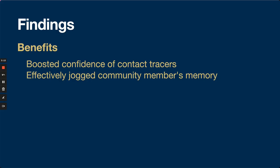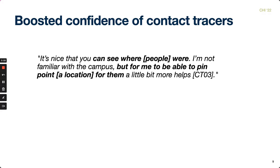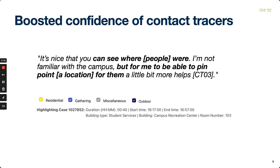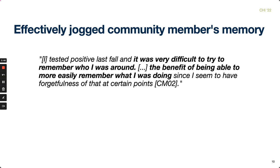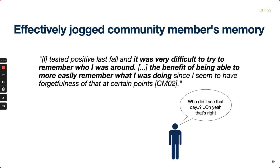From the mock contact tracing calls and subsequent participant interviews, we observed that the introduction of the Wi-Fi location data visualization did benefit the contact tracing process. When the contact tracers utilized the visualization on the calls, they reported a boost in confidence both in close contact identification and in their ability to collaborate with the community members. The metadata effectively offered context for more targeted and focused conversations about the positive case's activities. Additionally, the data was successfully used by contact tracers to jog community member memory if they experienced trouble recalling an activity, a contact, or a location. Location category information and date and time data were frequently used by contact tracers to prompt the community member if needed.